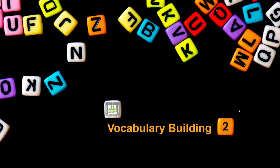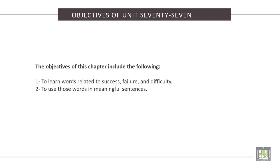Vocabulary Building 2, Unit 77: Success, Failure and Difficulty. The objectives of this chapter include the following: 1. To learn words related to success, failure and difficulty. 2. To use those words in meaningful sentences.